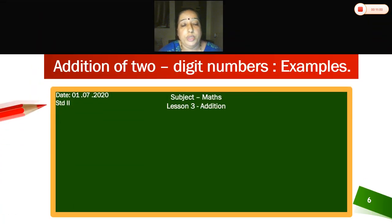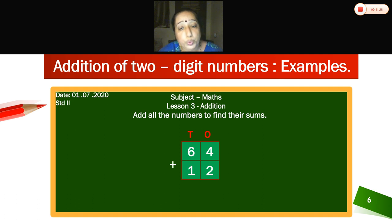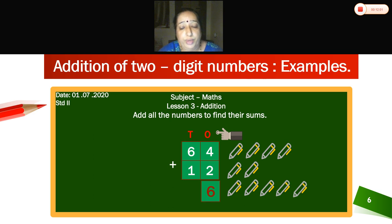Now we will see more examples. You have to add all the numbers to find their sums. Write the place value units — that is tens and ones. On the ones place you can see numbers 4 and 2. We will start with the ones place. Let us see the pens: 1, 2, 3, 4 pen, more 2 pens — 1, 2. Let us count all these pens: 1, 2, 3, 4, 5, 6 pens.